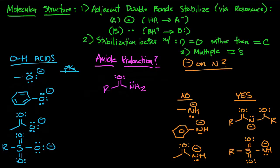Okay, so in the previous lecture we talked about electronegativity and radius, how that affects pKa. Let's talk about molecular structure.